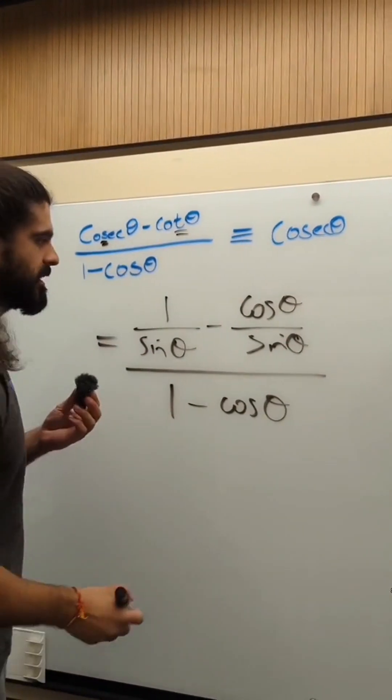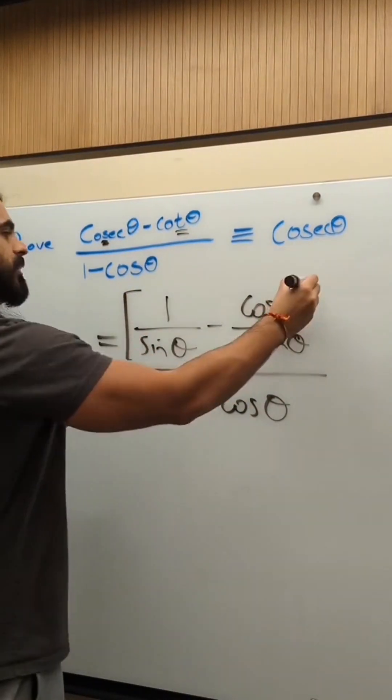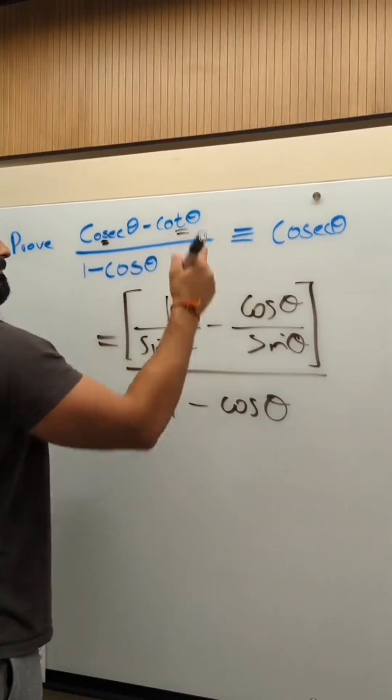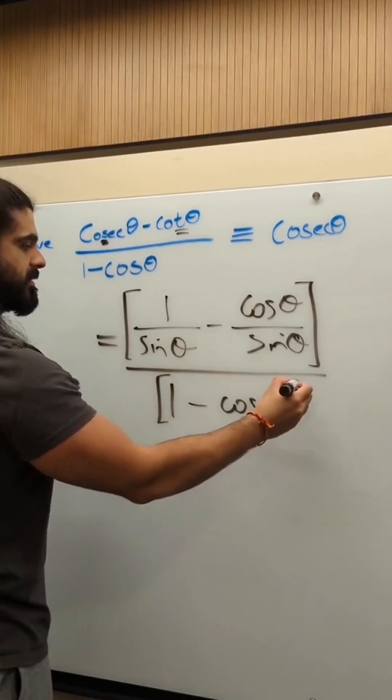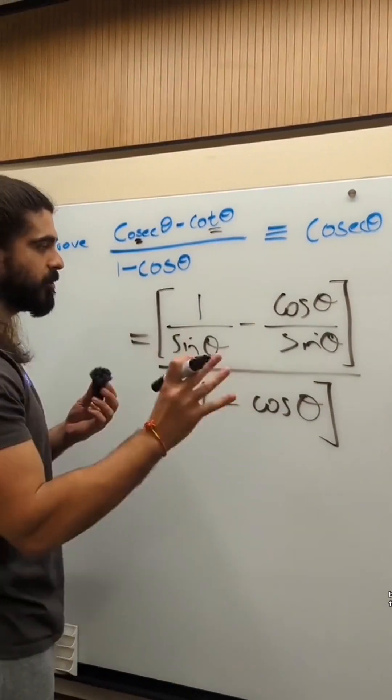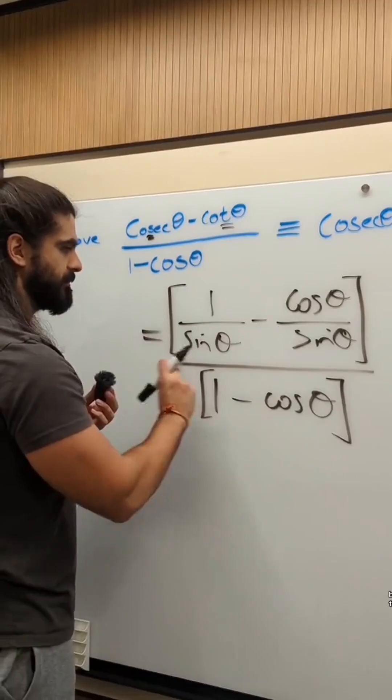So what you do next is you protect the numerator. All of this is the numerator and the denominator. This way, you distinguish between the numerator and the denominator by this line.